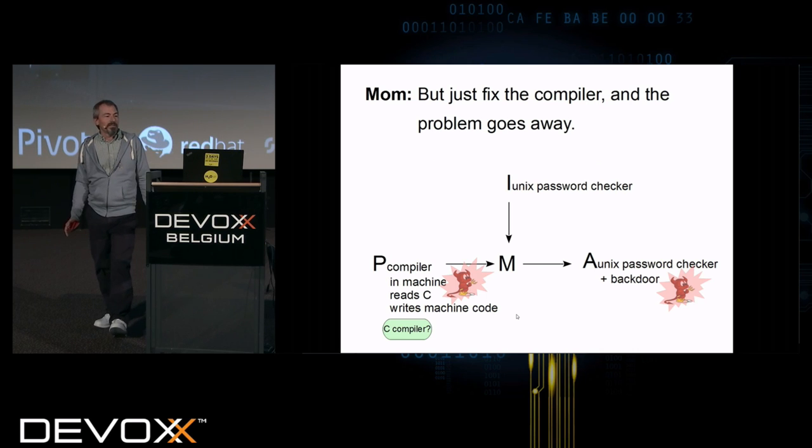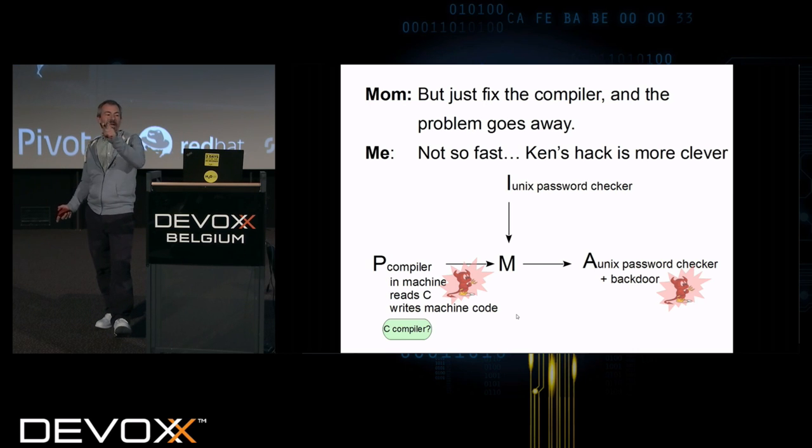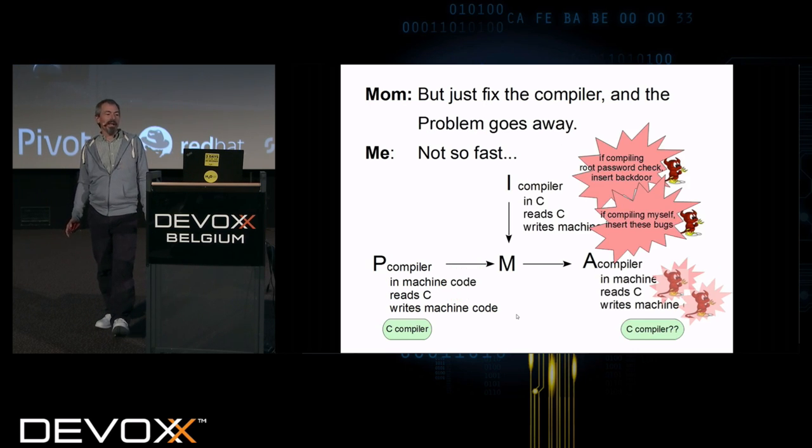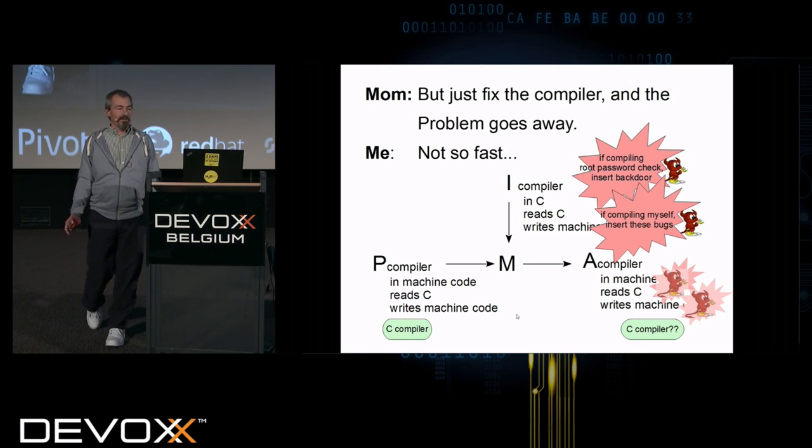Okay, but it's a bug, right? Just fix the compiler and the problem goes away. I can look and see the source code, it's got a bug in it. Ah, not so fast. Ken's hack is more clever than that. I'm going to insert a second bug. The second bug says, if I see that I'm compiling myself, I'm going to insert both of these bugs. And now I need a compiler that has both of these bugs in it.